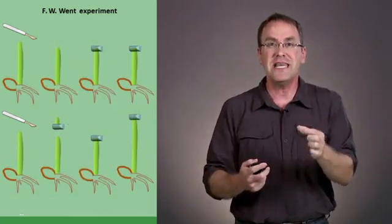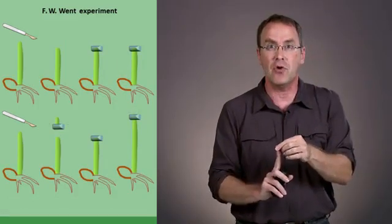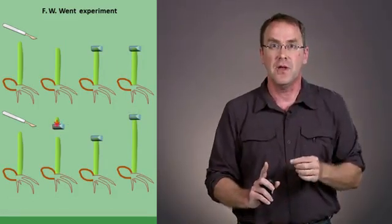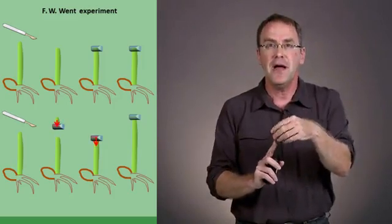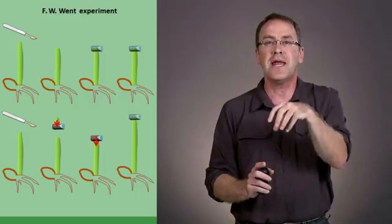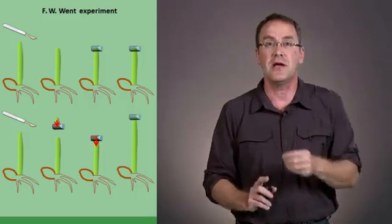What this is showing is that it wasn't the agar itself that contained a chemical that was causing the plant to grow, but rather that the agar that had been exposed to the tip contained some type of chemical which was causing the plant, the stalk, to elongate.